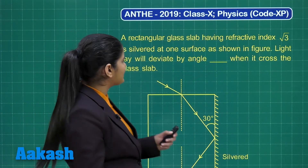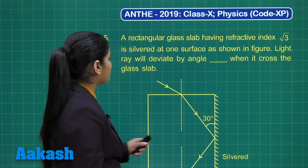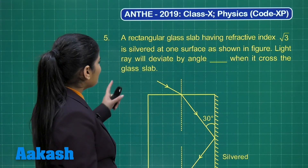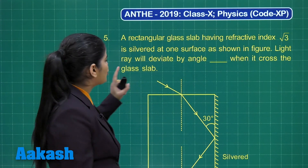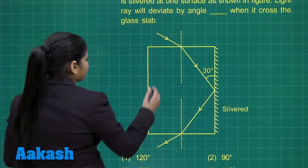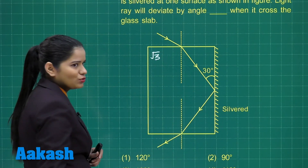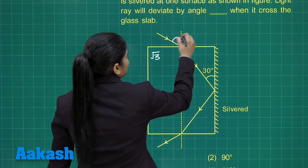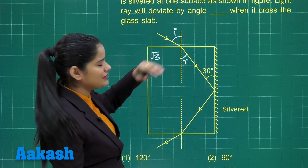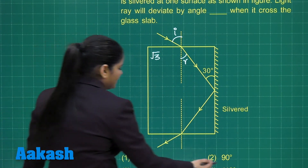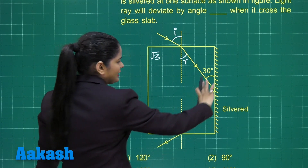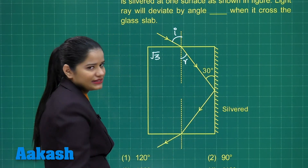Moving to the next question: A rectangular glass slab having refractive index √3 is silvered at one surface. The light ray will deviate by what angle when it crosses the glass slab? Here we are given this glass slab with refractive index √3. The deviation is taking place at this particular surface, this surface, and this surface as well.